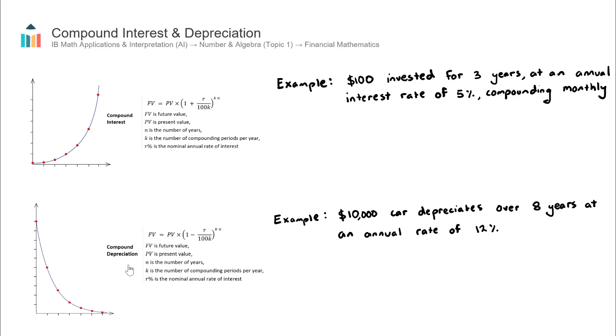Compound depreciation is all about the reduction in value of something over time. The most common examples are cars, computer hardware, or for companies, things like factories or tractors. Their value goes down over time because they get worn out and maybe get replaced by better models.